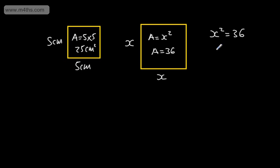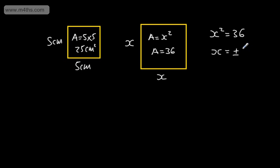We just need to be careful: when we've got a quadratic equation, we have a plus or minus answer. To solve this equation, all we're going to do is square root both sides. Square rooting is the inverse — it undoes the square. So x is going to be equal to plus or minus the square root of 36, giving us x equals plus or minus 6.